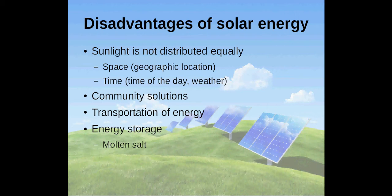Another issue is that sunlight is not equally distributed in space and time. Geographic location, weather and time of the day play important roles when collecting sunlight. Under certain circumstances, it might really be inefficient to have your own plant. In those cases, it could be more efficient to have community solutions or to transport energy from remote areas.